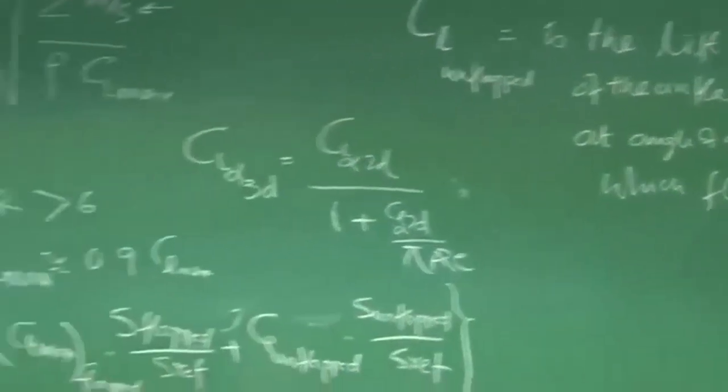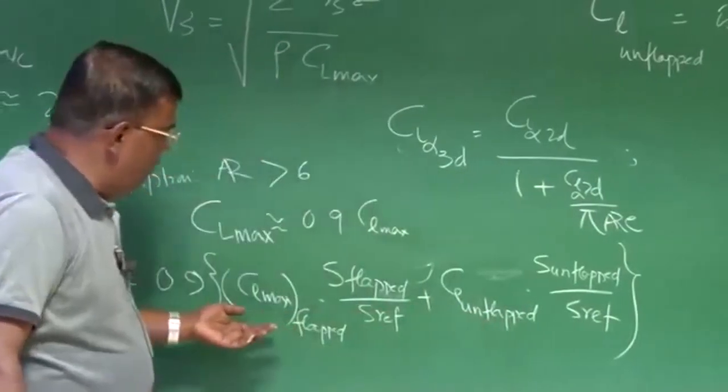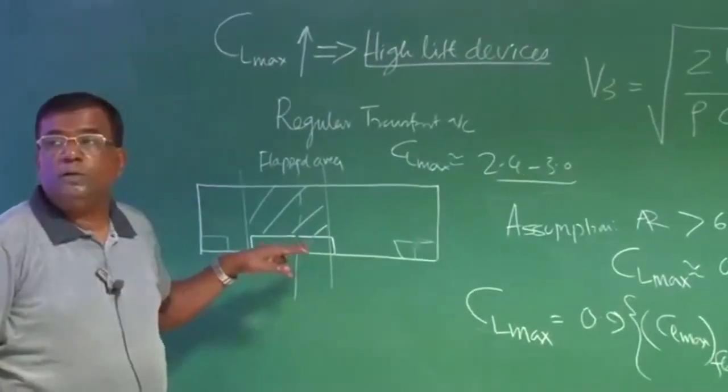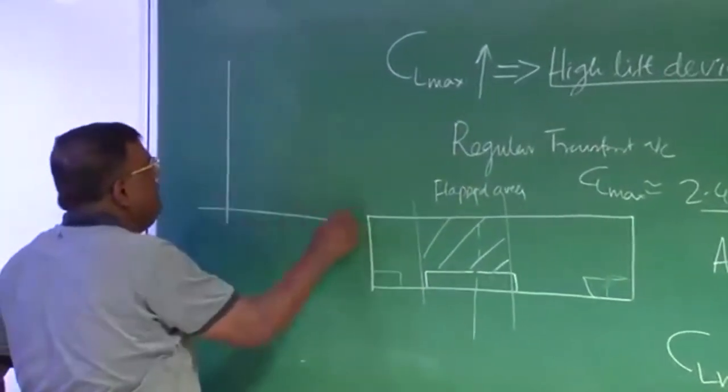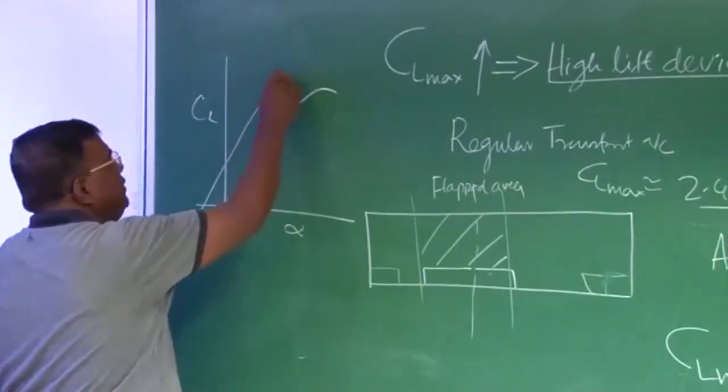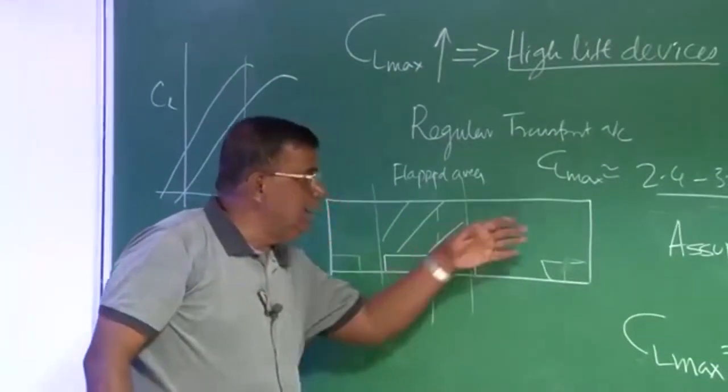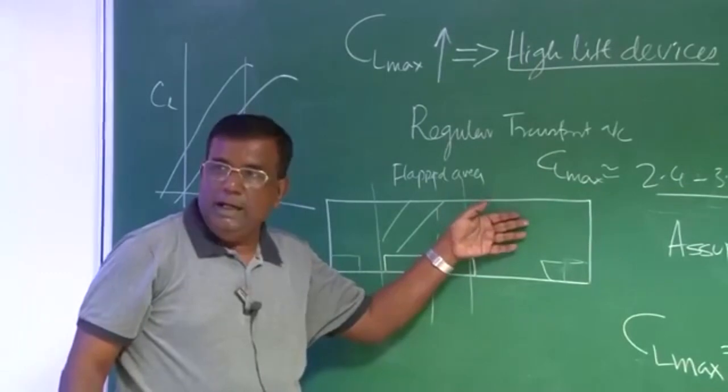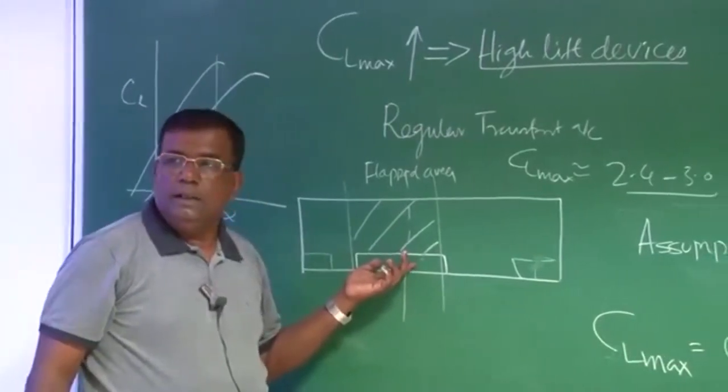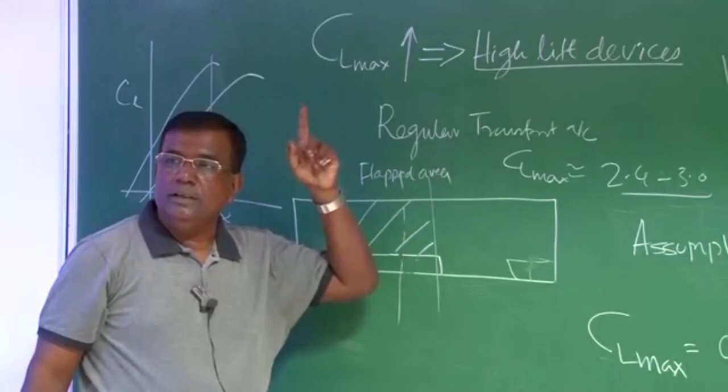This statement is important, please understand this. We are asking a question, what will be the CL unflapped? See, the moment you are flapping, when you are putting these flaps down, its stall angle will reduce, because the camber has increased, remember? If this is CL versus alpha, if this is symmetric, for camber CL max enhancement is there but stall angle will reduce, right? So how much CL this portion will generate will depend upon the situation that this gentleman should not stall. So let us say its stall angle is 10 degrees, then you only will calculate CL of this portion corresponding to alpha equal to 10 degree. Is this clear? Right. So this is a very, very important statement.